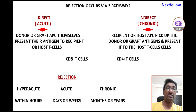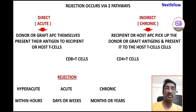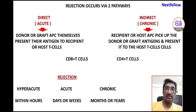Rejection occurs via two pathways: the direct pathway and the indirect pathway. Acute rejection takes place via the direct pathway, whereas chronic rejection takes place via the indirect pathway. In both pathways, it is the donor graft that is being rejected by the recipient T cell — that is the common feature.